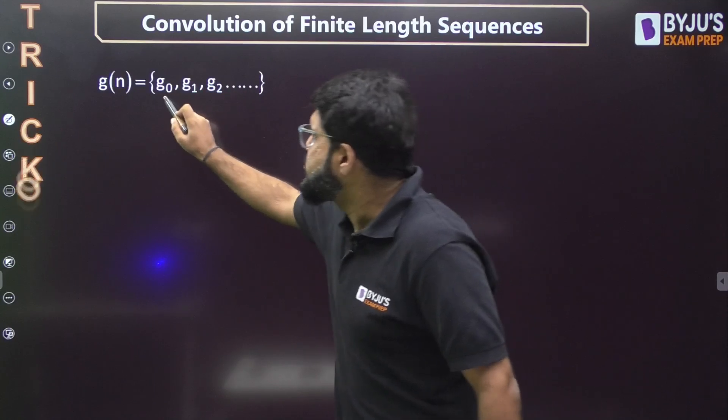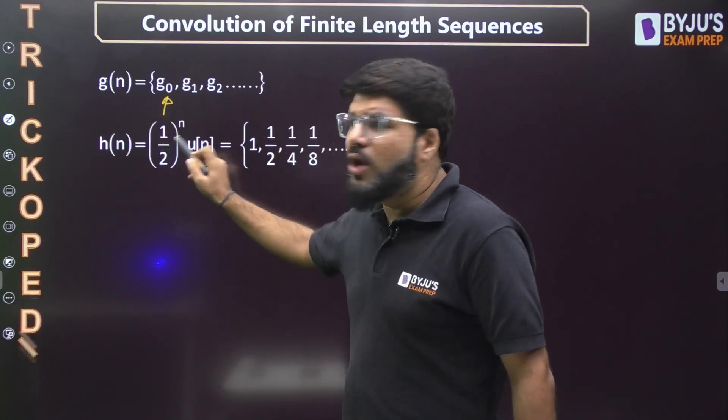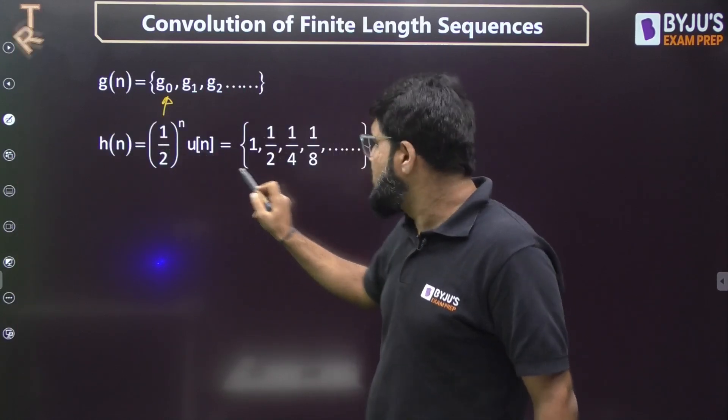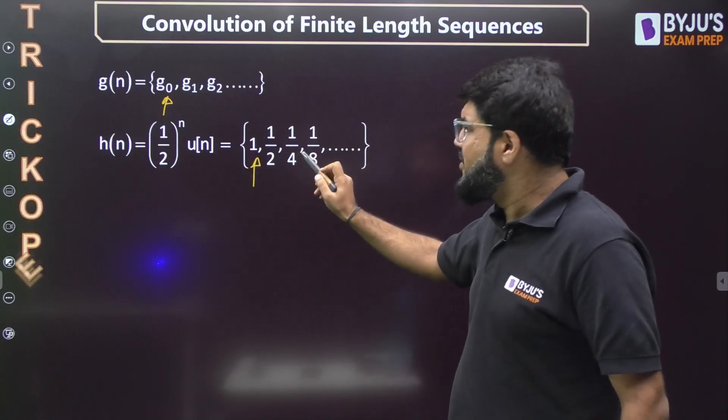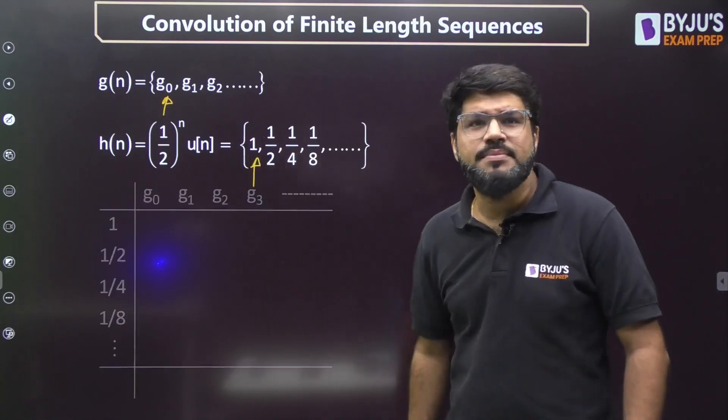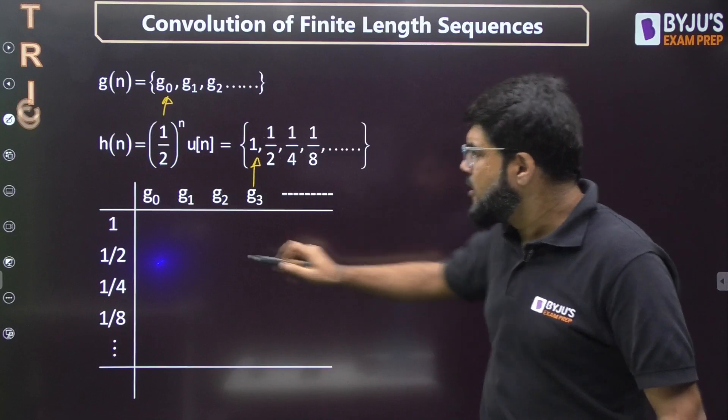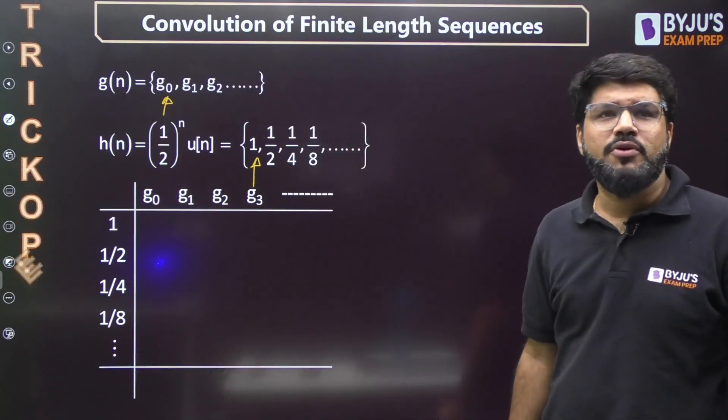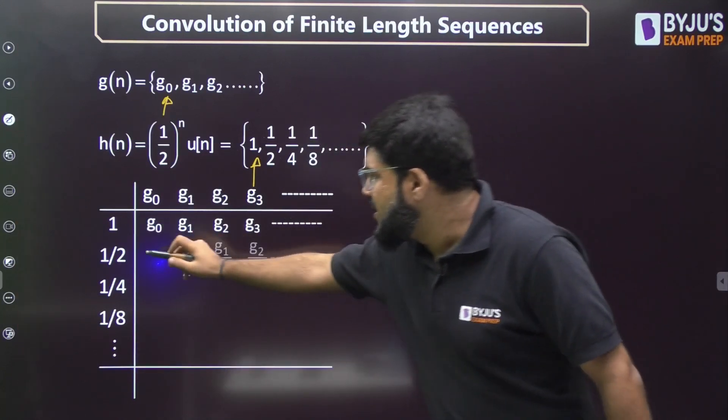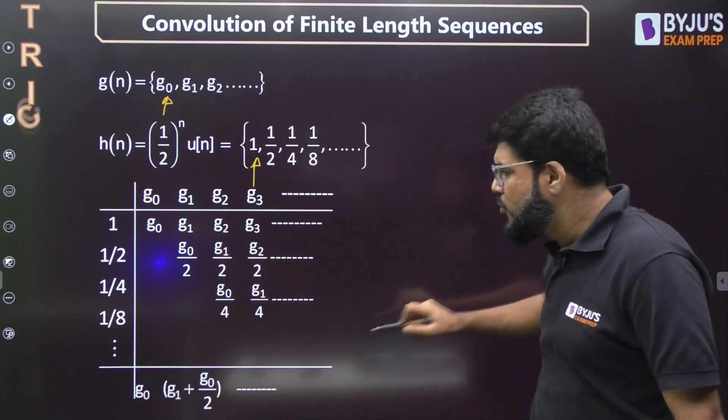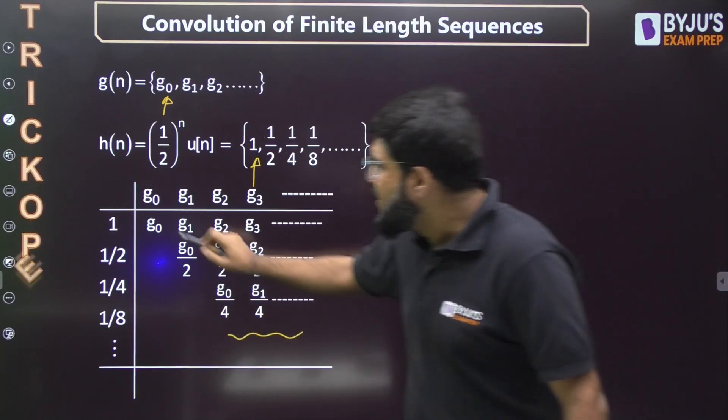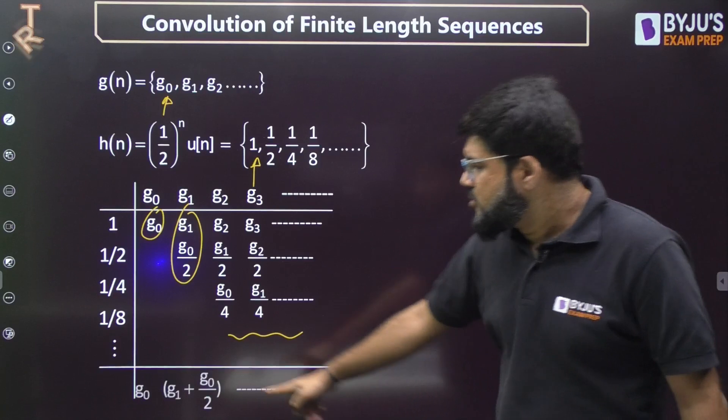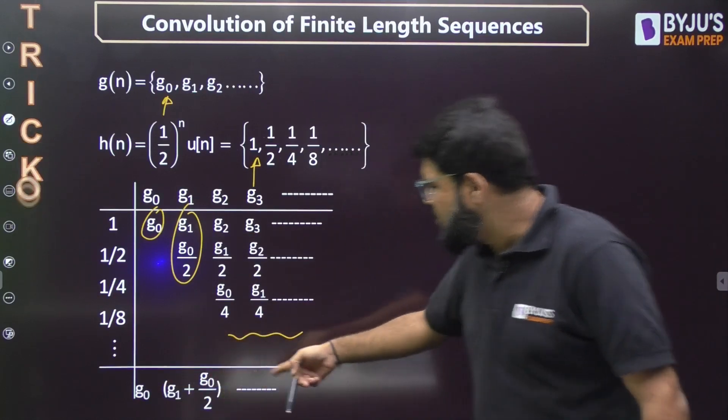g[n] is equal to 0 for n less than 0, so g[n] starts from origin: g[0], g[1], etc. h[n] is given as (1/2)^n u[n]. u[n] also starts from origin, so this is the first value: (1/2)^0, then (1/2)^1, (1/2)^2, etc. Apply the same sum by column. g[0], g[1] on the top side, 1, 1/2, 1/4, etc.